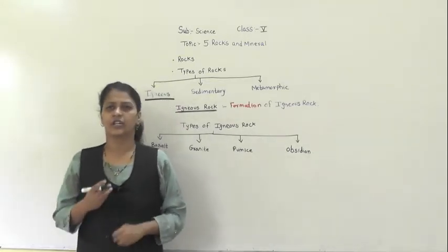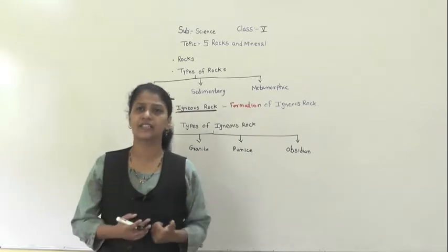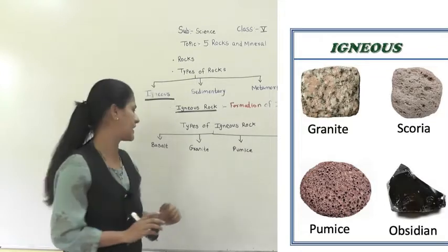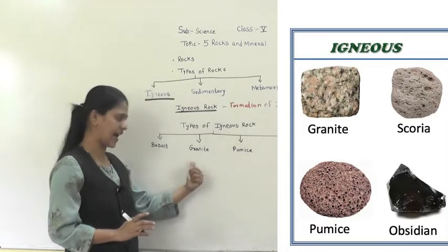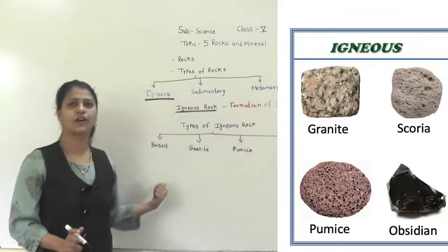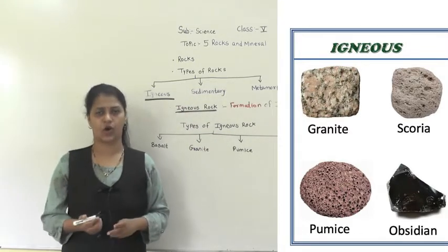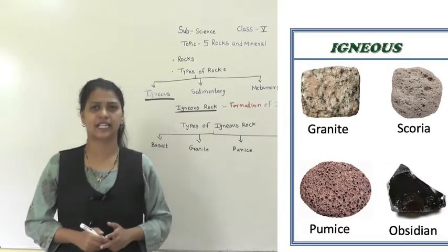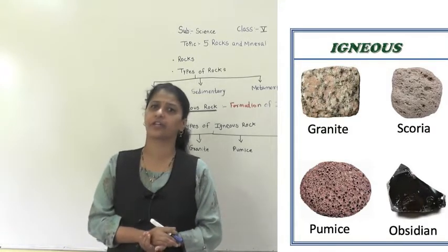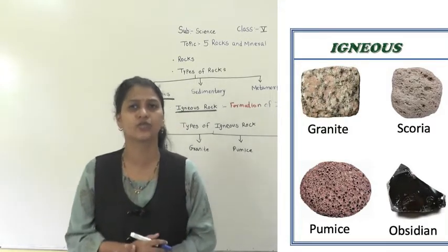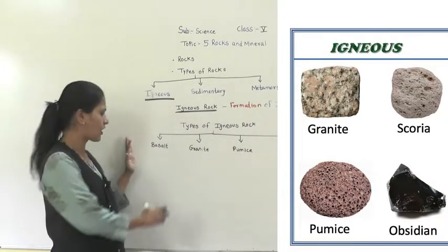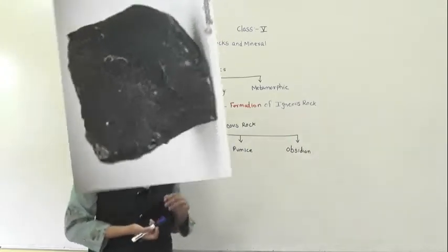Igneous rock is also classified into four main types: basalt, granite, pumice, and obsidian. These are the four types of igneous rocks. We will study how each of these four types is formed and what their uses are.